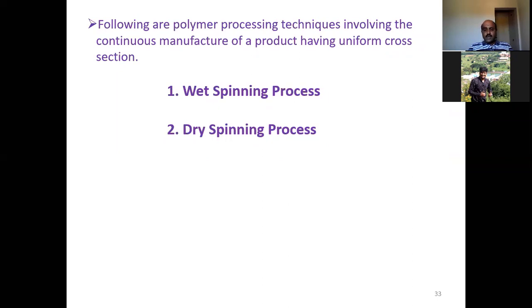Under the first technique — continuous manufacture of a product having uniform cross section — we have two methods to discuss: wet spinning and dry spinning.